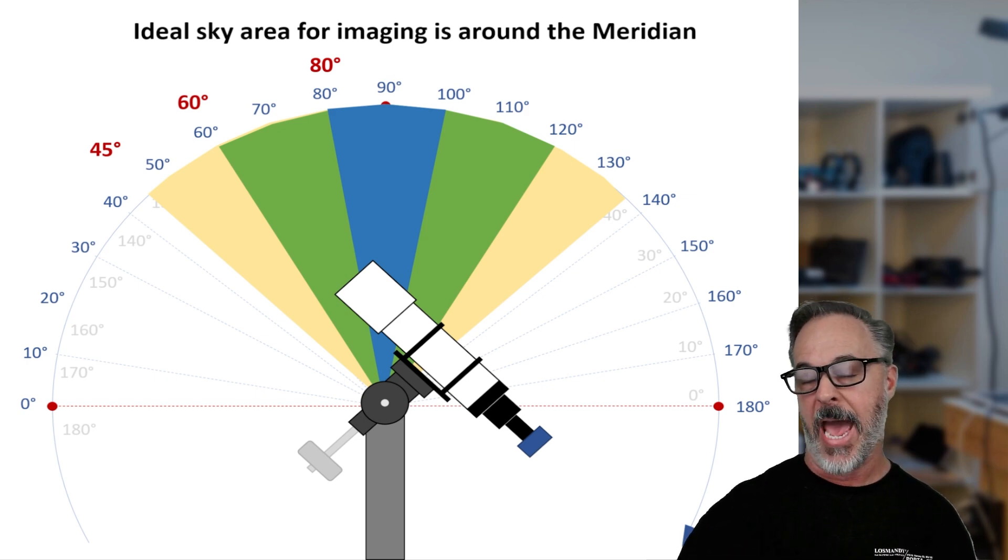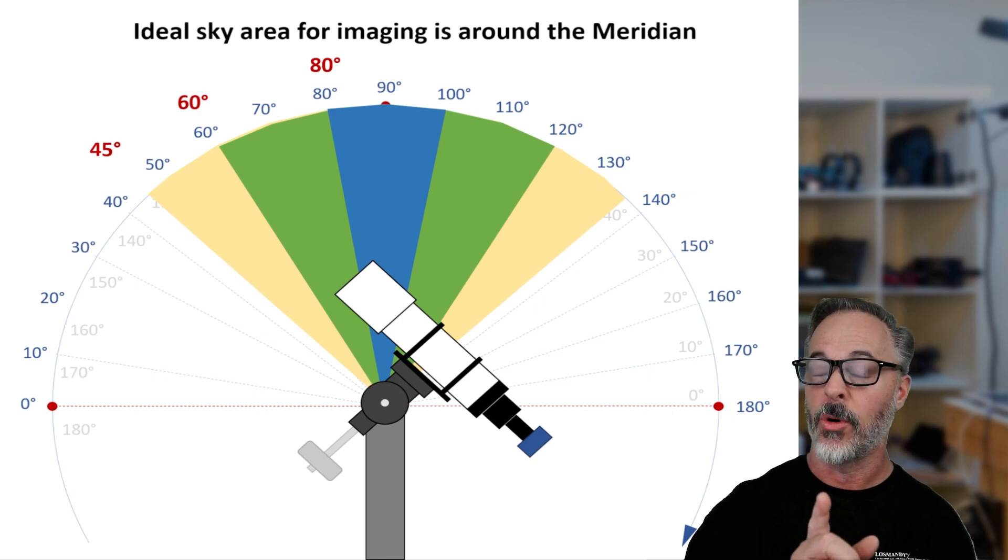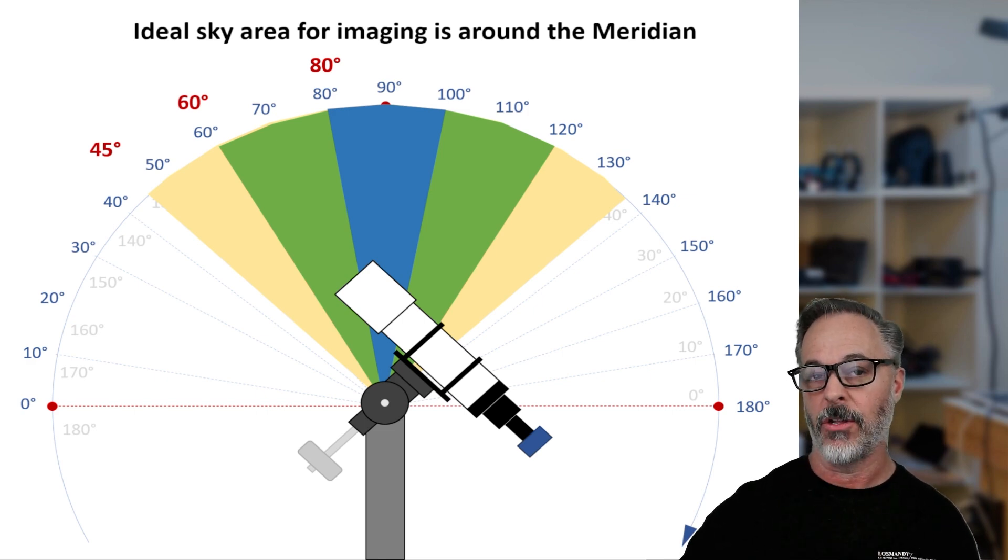So when we talk about maximizing our imaging quality by reducing the amount of atmosphere, we're really talking about when that target goes through the meridian, whatever angle or declination or altitude it's going to be.